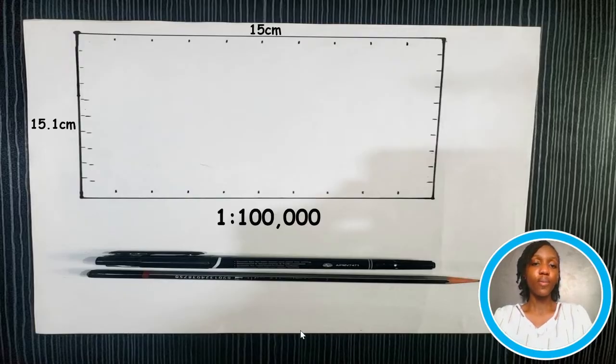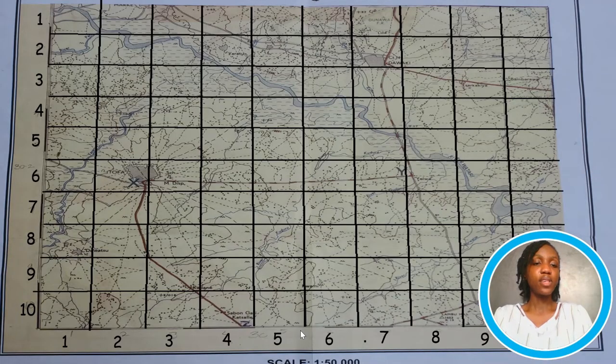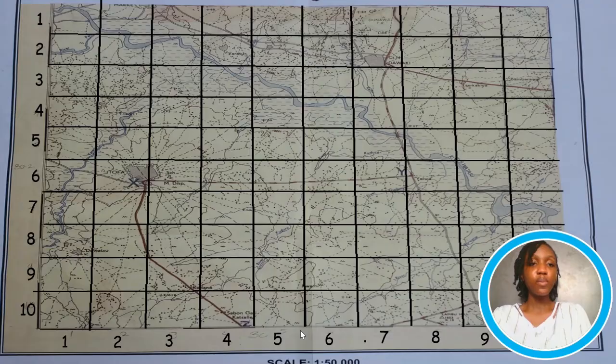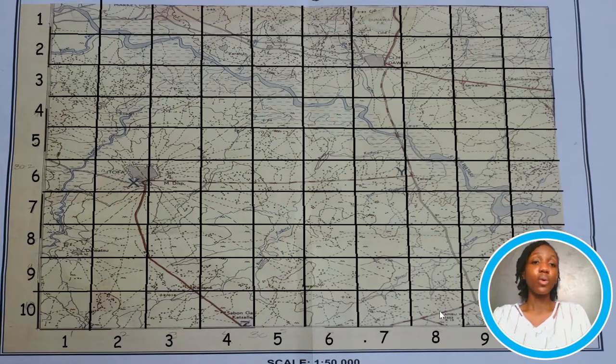Now, we can draw our grid. I did 10 boxes both horizontally and vertically. And since the map is basically 30 centimeters by 30 centimeters, each box is going to be 3 centimeters by 3 centimeters. You can see that on measuring, I got 30 by 30.2 centimeters. And when solving it, I didn't approximate it to 30. You solve it the way you measured it out from your graph. Don't approximate, please.